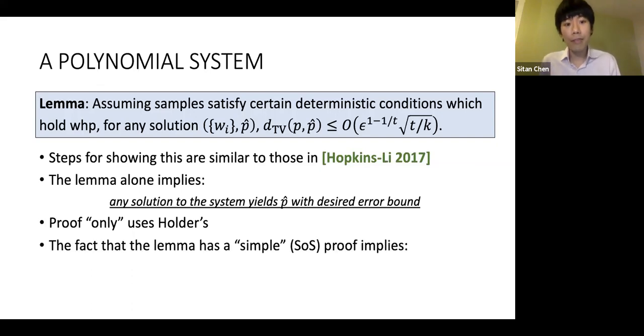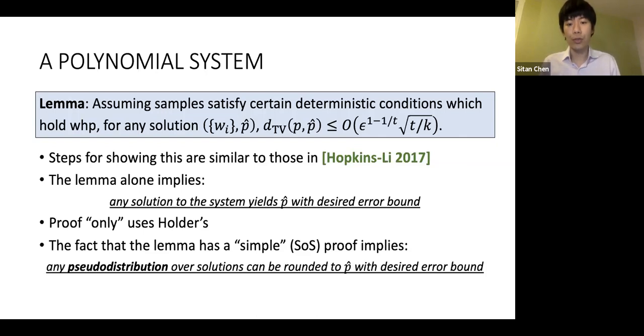The fact that this lemma has such a simple proof, specifically in the sum of squares proof system, is already enough to imply the following: that any pseudo-distribution over solutions can be rounded to an estimator p-hat which satisfies the desired TV bound.